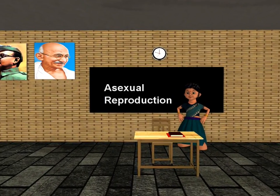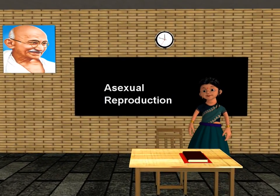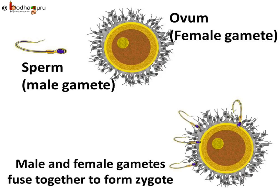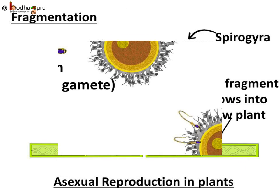Good morning children. Today we shall learn about asexual reproduction in animals. We have already learnt about sexual reproduction in animals and human beings. The male and female gametes take part in sexual reproduction — they fuse together to form a zygote, and then the zygote turns into an embryo.